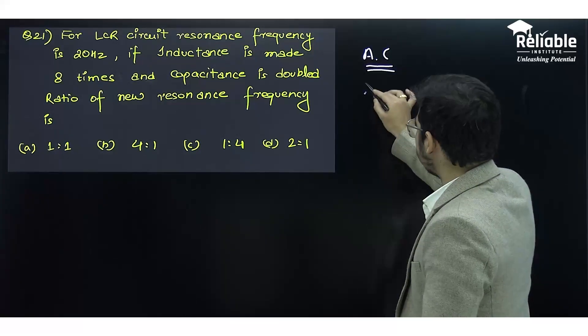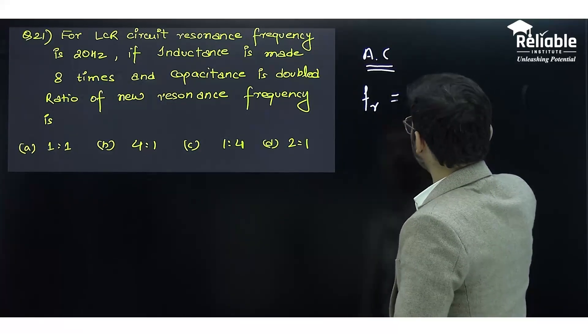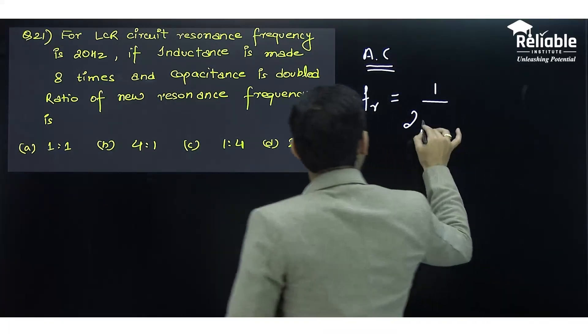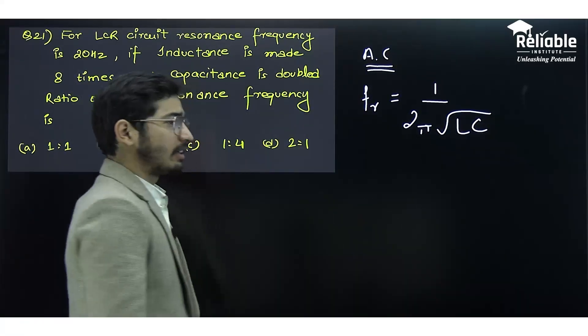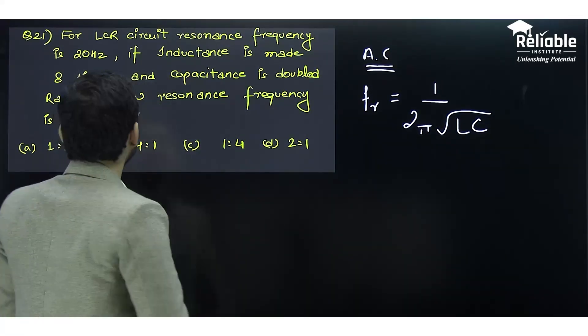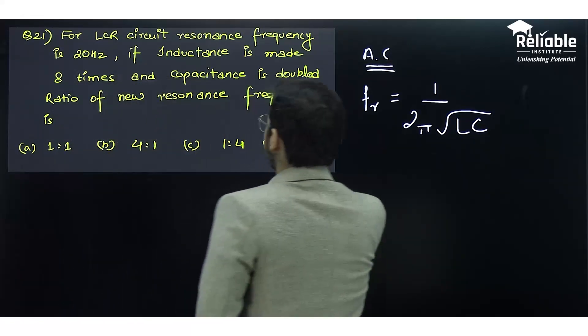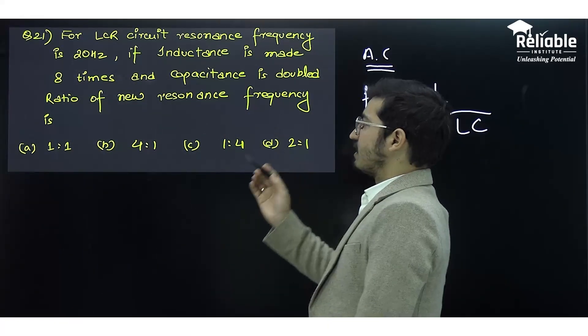For an LCR circuit, the resonance frequency is given. You must remember the formula: f_r = 1/(2π√(LC)), where L is inductance and C is capacitance. Now, if the inductance is made eight times and capacitance is doubled, the frequency will definitely change.